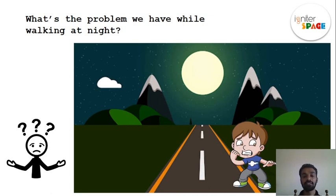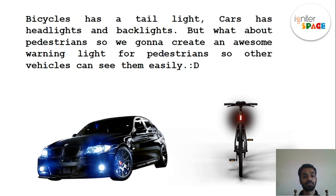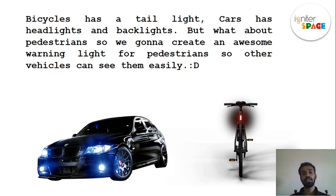People get into dangerous accidents because of that. Vehicles like bicycles and cars have lights to indicate they are there — the front and back lights of a car, or reflective material on bicycles. The problem is pedestrians don't have these warning lights, so other vehicles can't see them properly. That is the problem we will solve today.